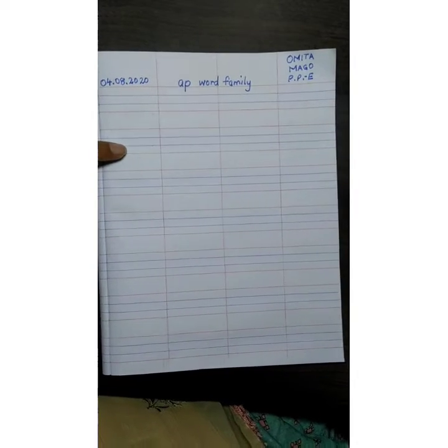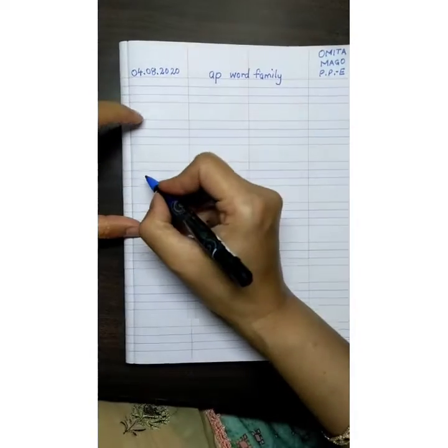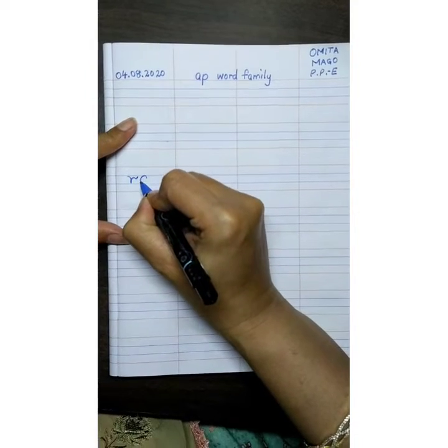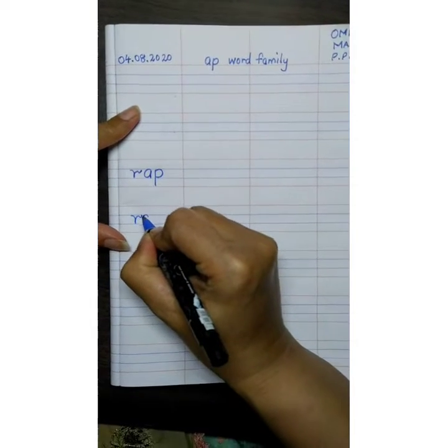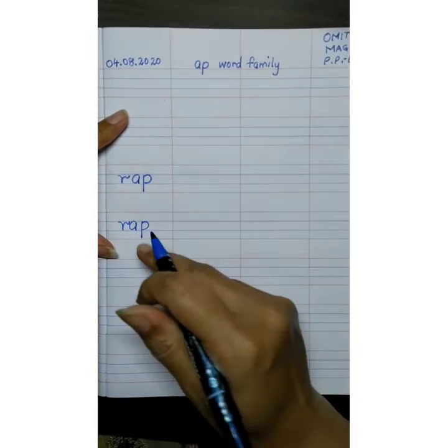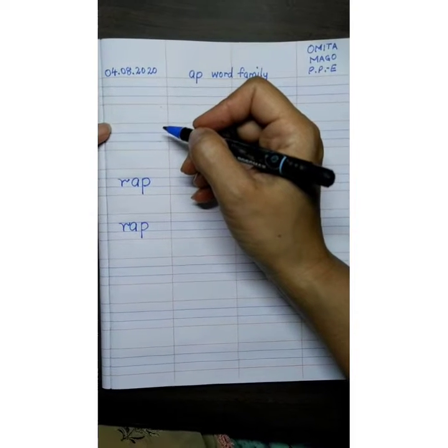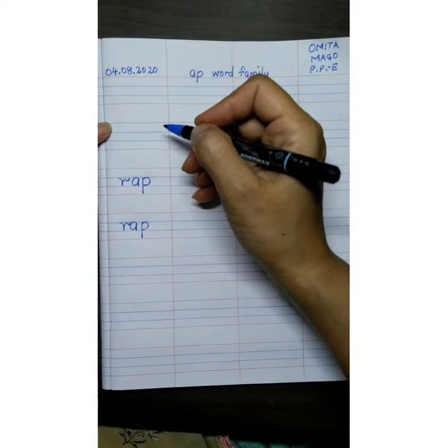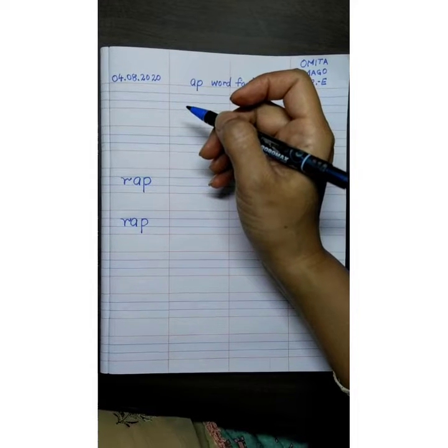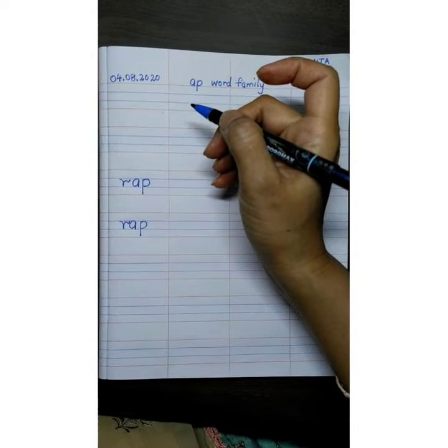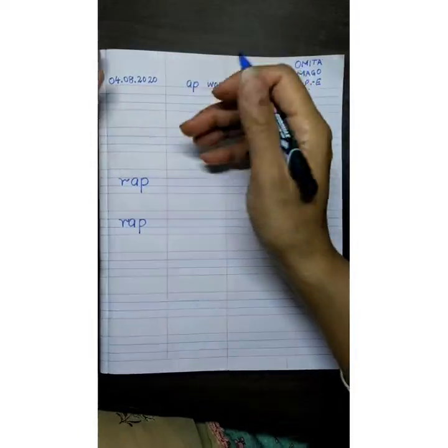Now we will leave two lines from the top and we will write the first word. R, app, rap. And now what is rap? Rap is a music, kind of a music which is recited rapidly in a rhythm. Or a loud knock. That is rap.